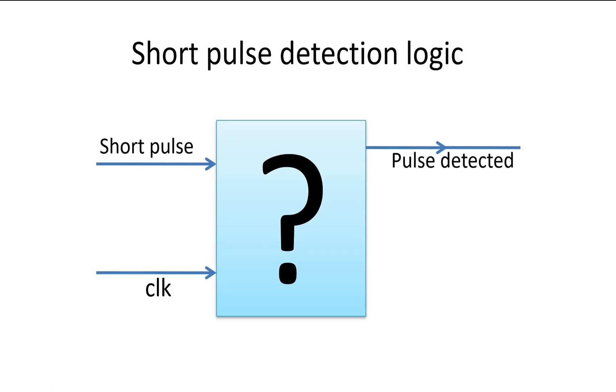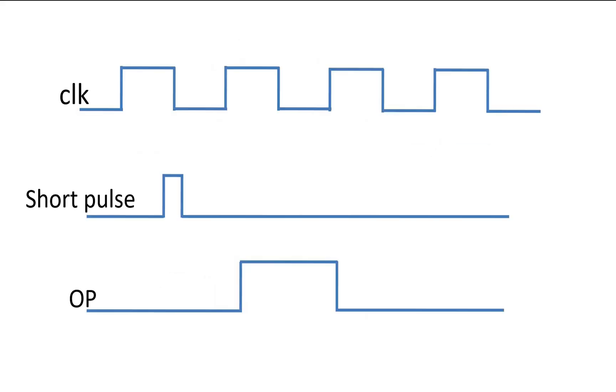Friends, to clarify this problem statement, I have drawn timing diagrams. Let me share those timing diagrams with you. These are the timing diagrams: two inputs - clock and short pulse input - and the output which I named as pulse detected. This is the clock signal and the short pulse applied to the unknown module. You see, it is quite less with respect to the clock period and it is asynchronous also. It is not aligned with any of the edges. As soon as this pulse is detected by the unknown module, it should give its output high for one clock cycle as shown in the figure.